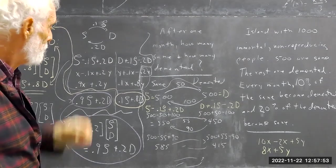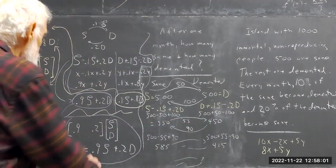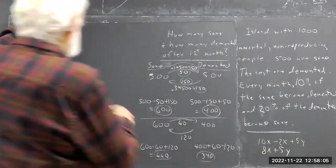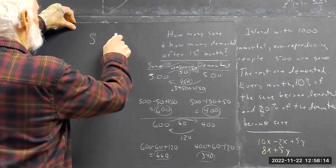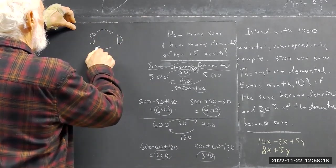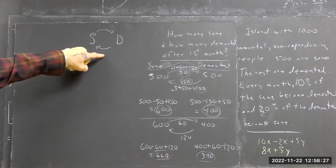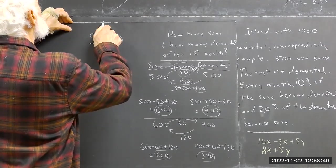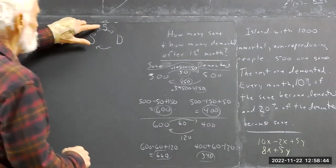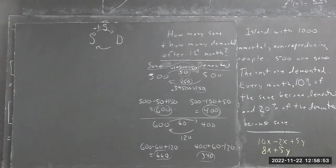Now I want you to go back to your problem with 30%. What are you going to do to get the calculations for each arrow? For the sane-to-demented arrow, the calculation is 0.1S — that's 10% of S. What are you going to do for the demented-to-sane arrow? It's going to be 0.3D.